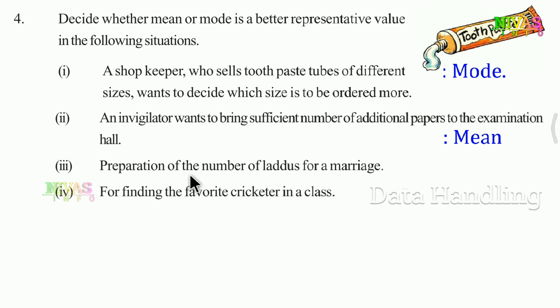Third situation: The preparation of the number of items for a marriage. For a marriage, you need to prepare sufficient quantities, which requires calculating an average amount. Here mean is the better representative value, as it accounts for total quantities needed.